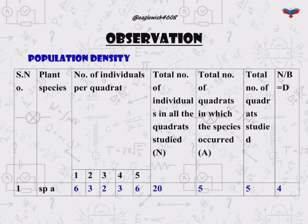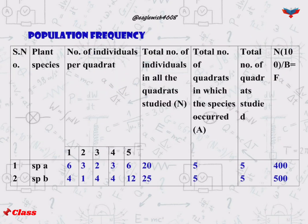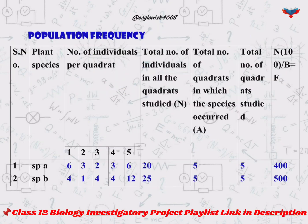The observation of the experiment must be written in different tables — one for population density, and another for plant population frequency.